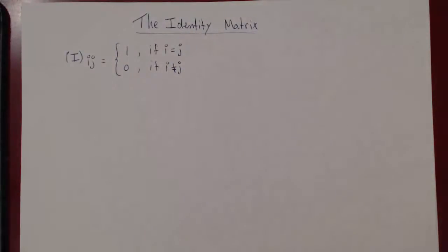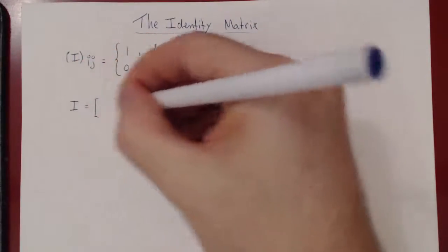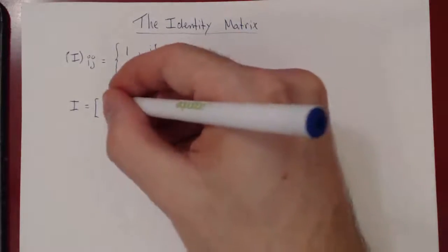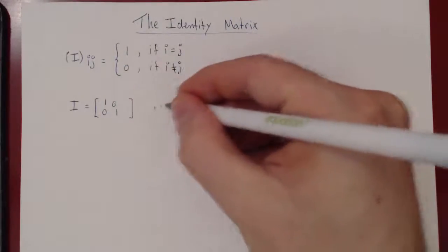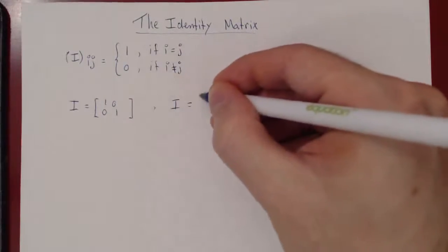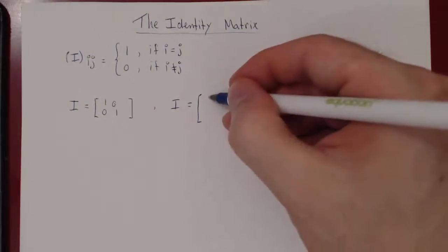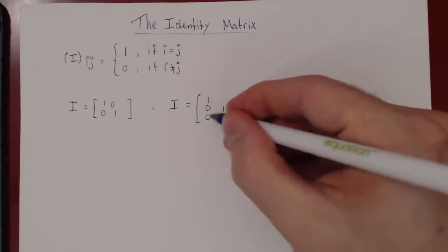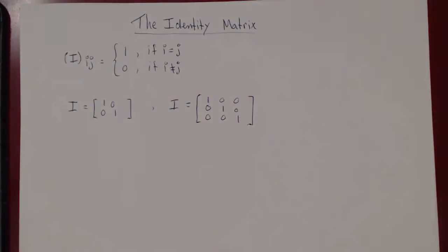The identity matrix I can be of any size. If I were a 2×2, on the main diagonal the entries are 1, and off the main diagonal everywhere else the entries are 0. If I were a 3×3, on the main diagonal all entries are 1, and off the main diagonal all other entries are 0. The same holds for a 4×4, 5×5, and so on.